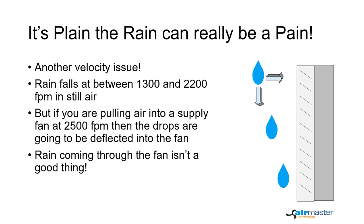Falling rain travels between 1,300 and 2,200 feet per minute in still air. If however the air in which the rain is passing is being pulled into a fan, then the rain is going to be dragged into the fan as well, which is definitely not a good thing. This is a consideration for a supply fan. It is actually the opposite for exhaust fans, since a higher velocity will help keep the rain out of the unit — particularly in the case of wind-driven rain, the higher the velocity the more resistant it is going to be to water penetration.